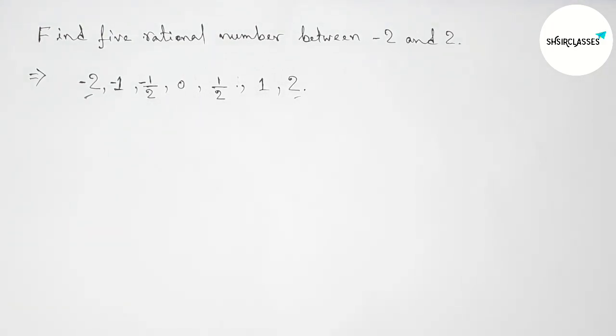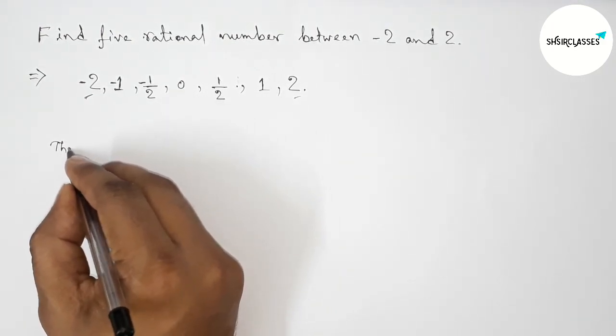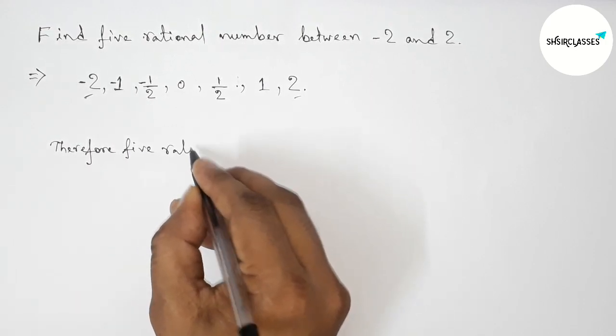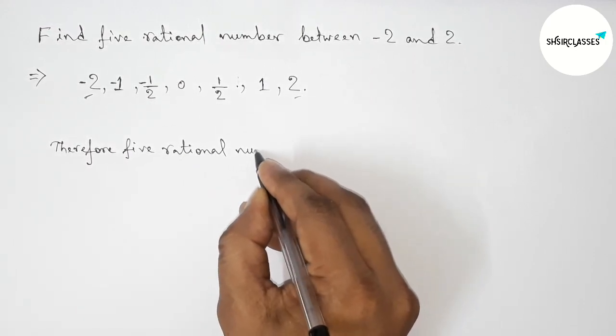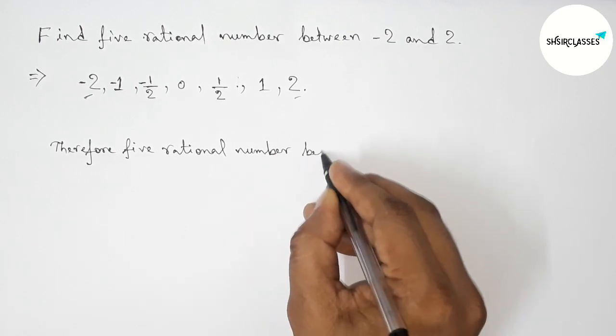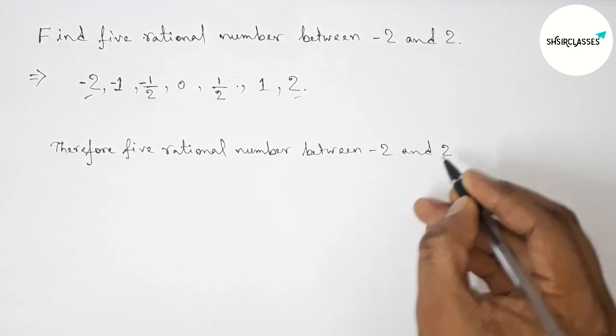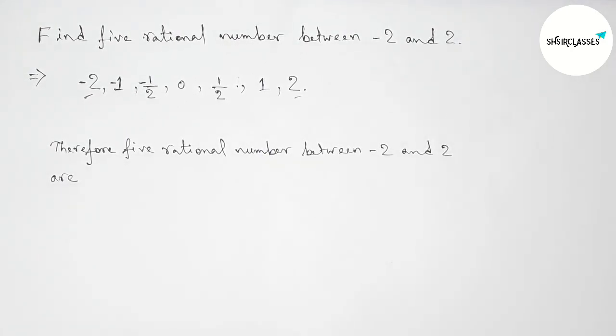But here these are five required rational numbers. We know that between minus 2 and 2 there are many rational numbers. Therefore, the required five rational numbers between minus 2 and 2 are: